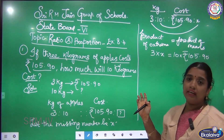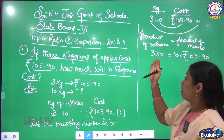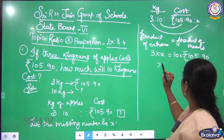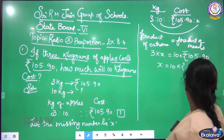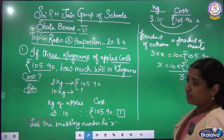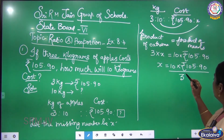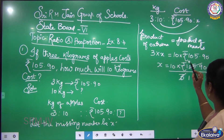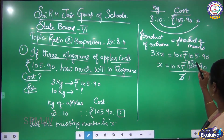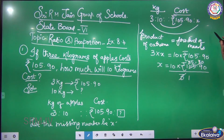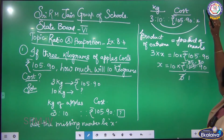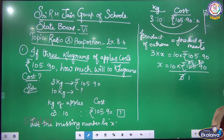3 into X is equal to 10 into 105 rupees 90 paise. Now I am going to find the X value. Send the 3 to the other side — it becomes division. X is equal to 10 into 105.90 divided by 3. I can cancel: 105.90 divided by 3.